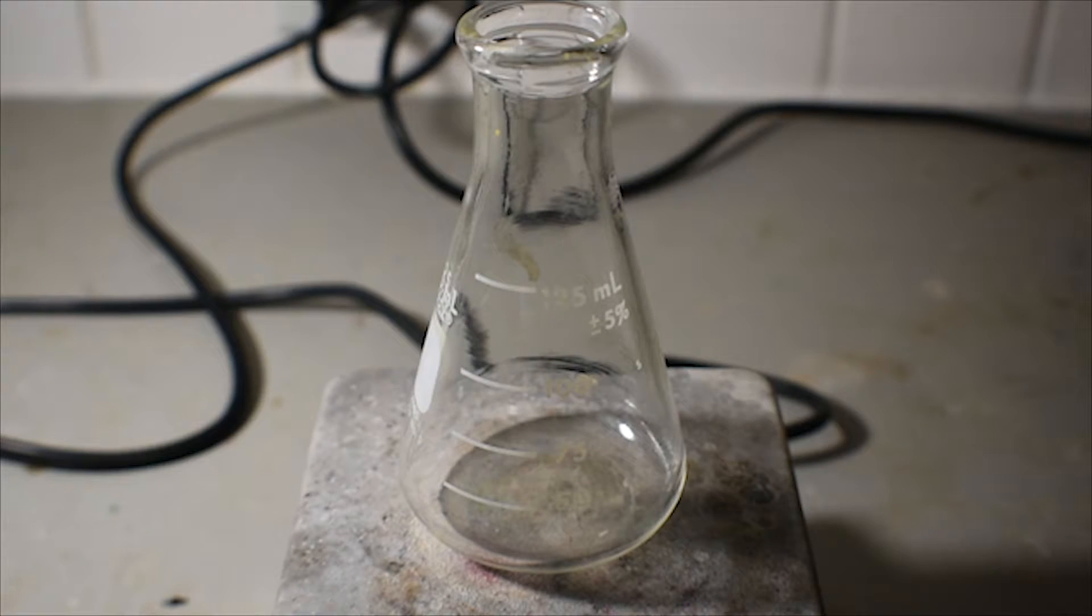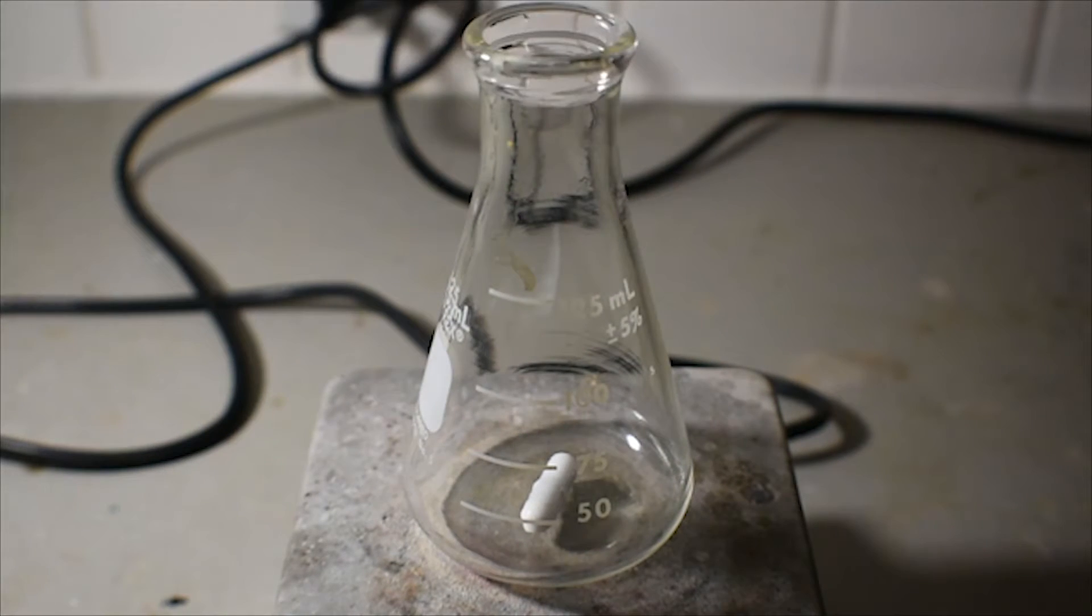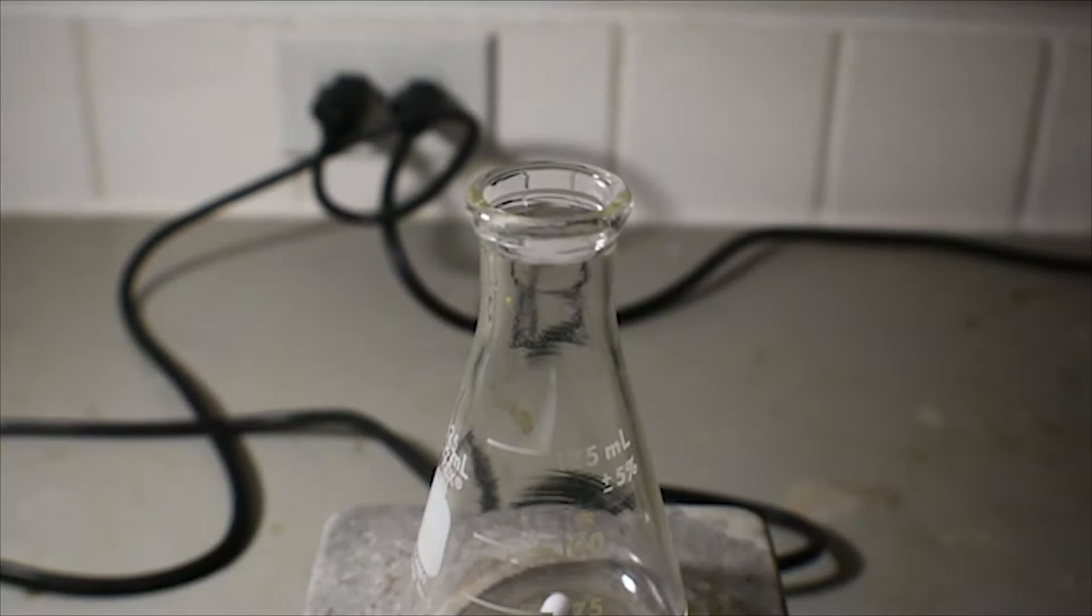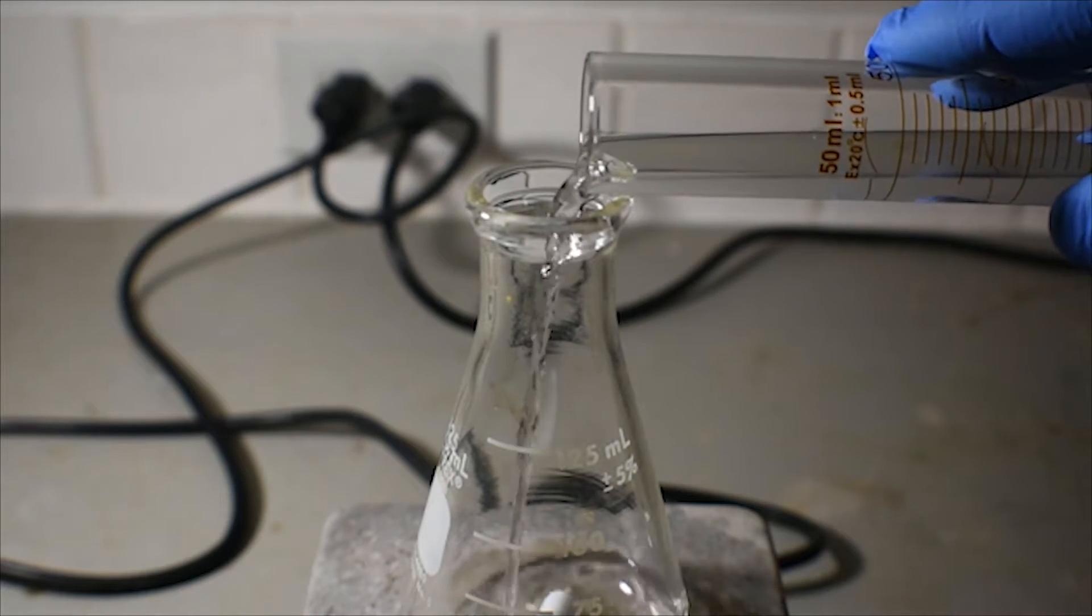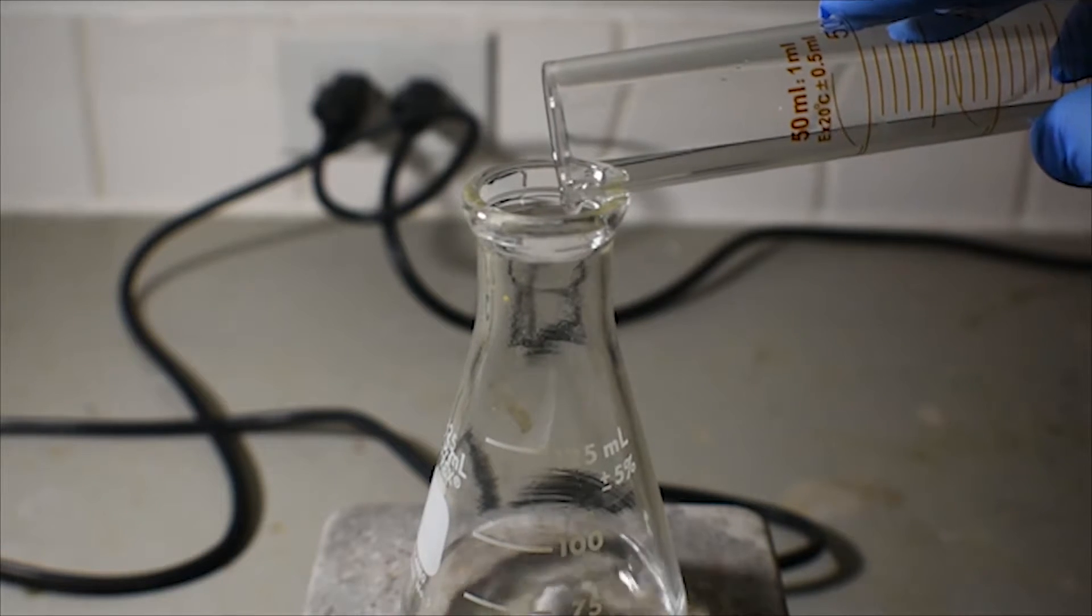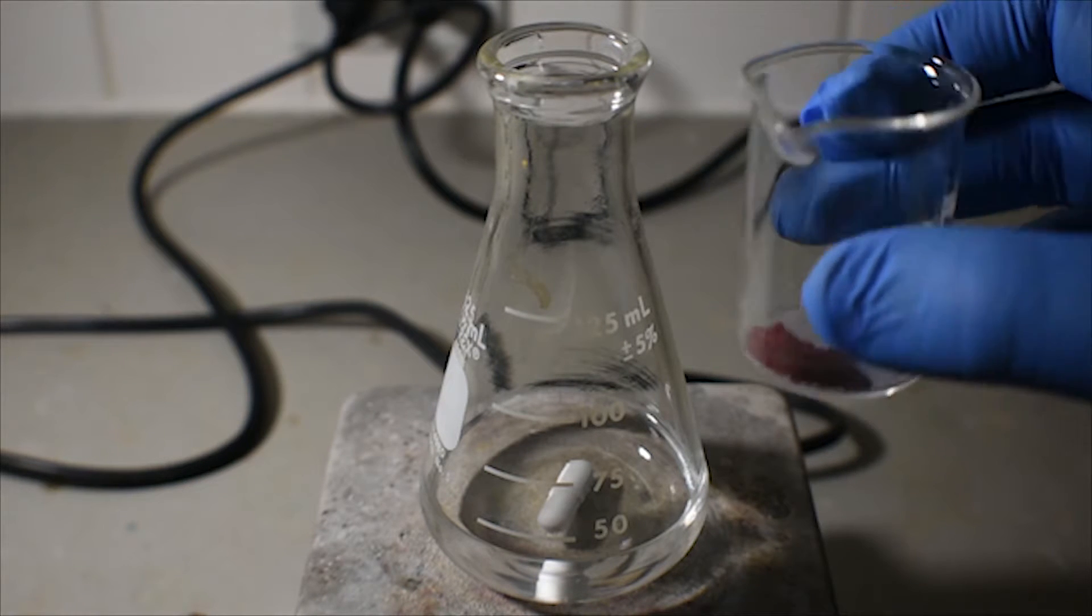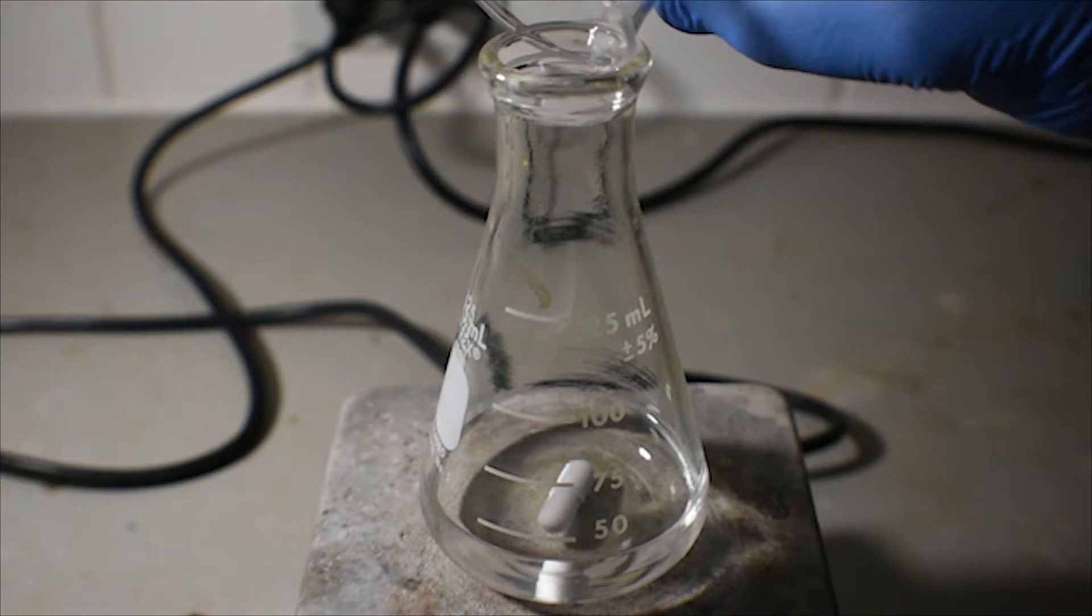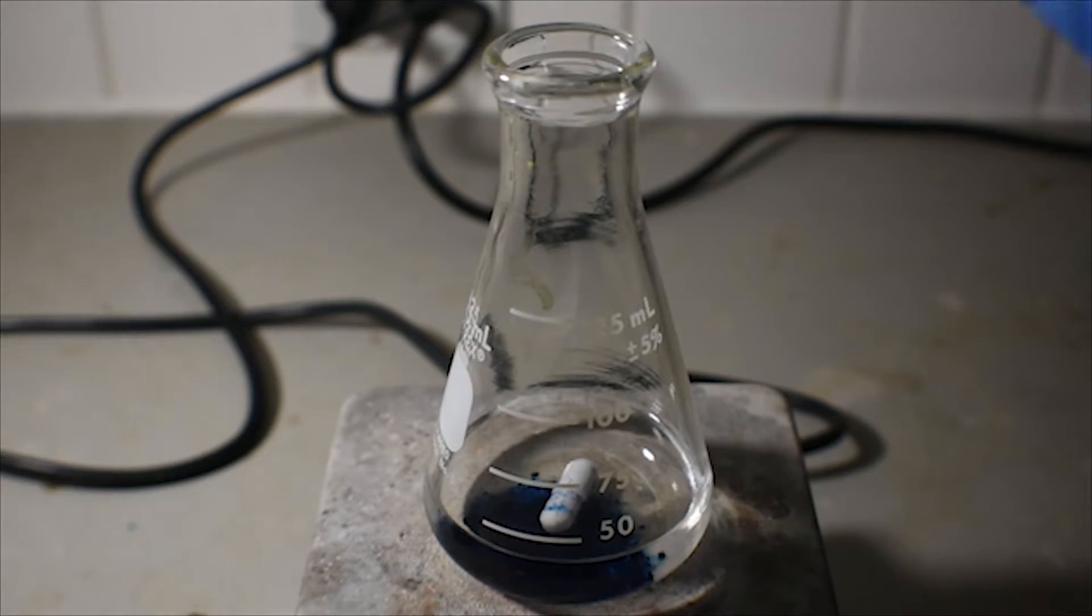Here, on the hot plate stirrer, I have a 125 milliliter Erlenmeyer flask. To this, I'm going to add a medium-sized stir bar. Now I'm going to add the 30 milliliters of 95% ethanol. It doesn't particularly matter in what order you add the reagents, so I'm going to add the cobalt-2 chloride hexahydrate first. We can see the beautiful blue color of the cobalt-2 chloride dissolving in the ethanol.